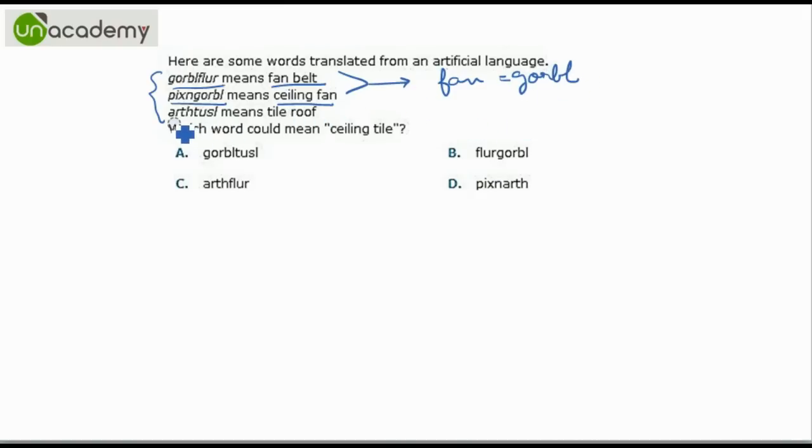Also we have something for tile roof and we have to find out ceiling tile. So if fan is G-O-R-B-L then ceiling is P-I-X-N. So we will find out the option with P-I-X-N. That is this one. No other option with P-I-X-N in the start. So this will be the answer.